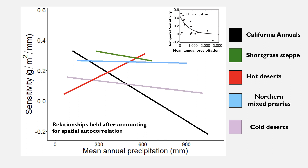Linearizing these relationships, we can see substantial variation in the sensitivity–mean annual precipitation relationships according to vegetation type. Whereas we see the expected negative relationship across vegetation types for the California annuals as well as the short grass steppe, this relationship is very weak in the northern mixed grass prairies. However, it shifts toward positive in the hot deserts region, which is opposite of what we would predict based on patterns observed across vegetation types.